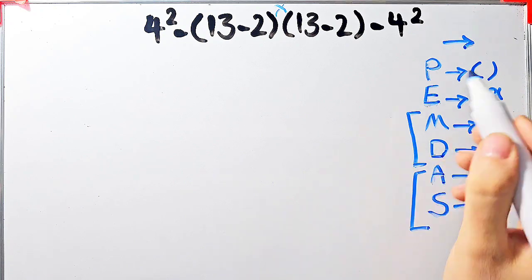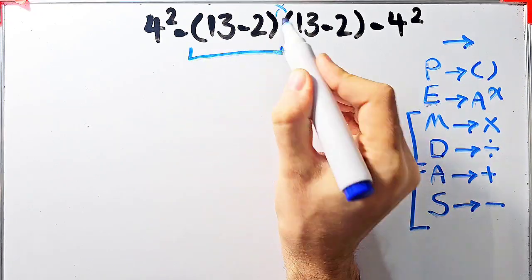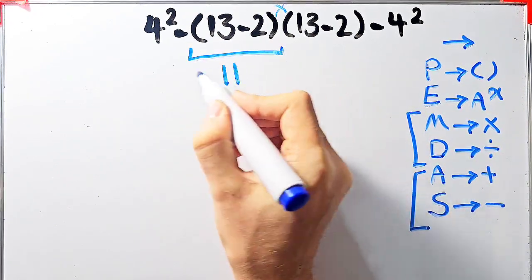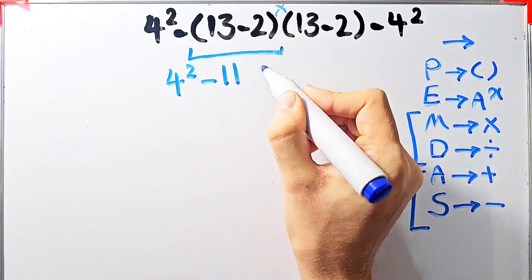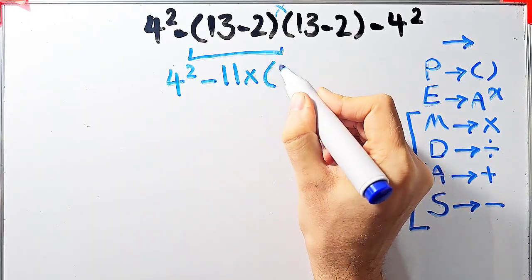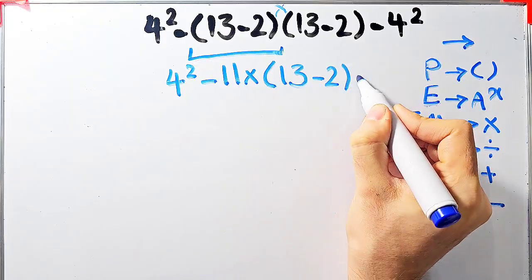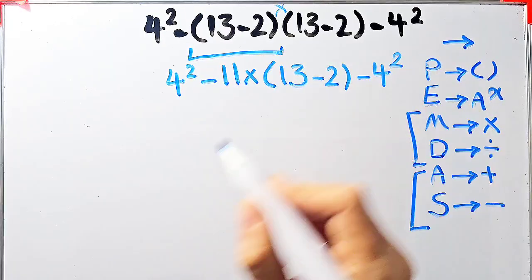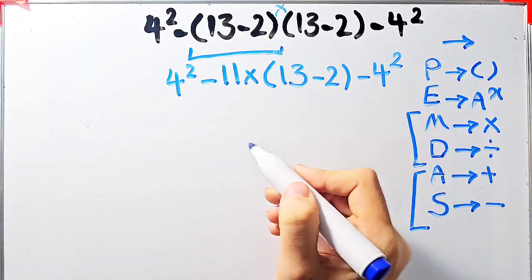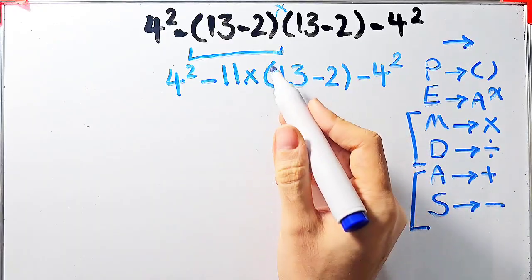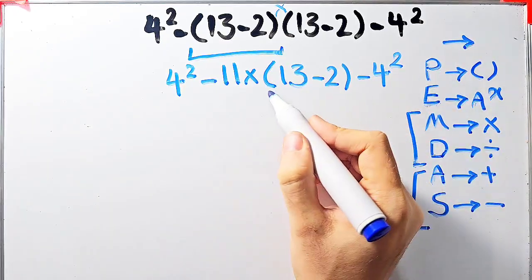Okay, according to the PEMDAS rule, first we simplify the parentheses. Inside the first parentheses we have 13 minus 2; 13 minus 2 equals 11. Now we have 4 to the power of 2, minus 11, then times open parentheses 13 minus 2 close parentheses, then minus 4 to the power of 2. Now we have exponent, subtraction, multiplication, and parentheses again, so we simplify the parentheses.